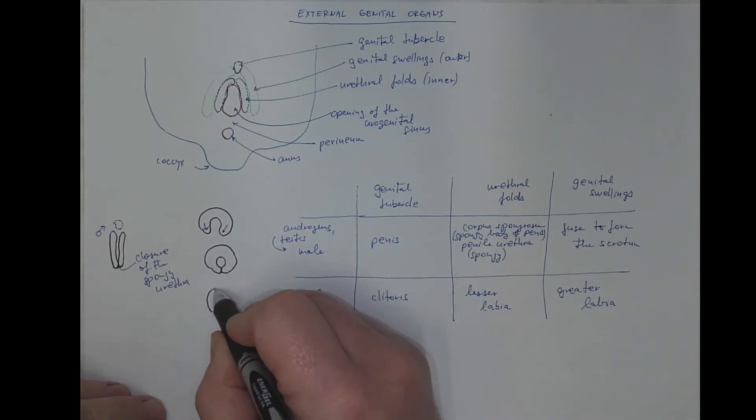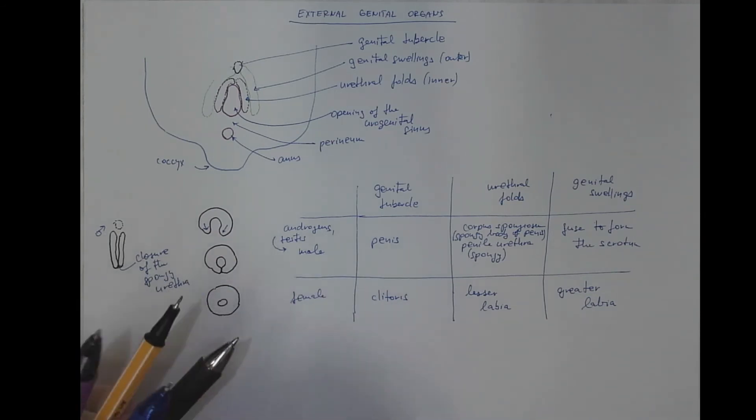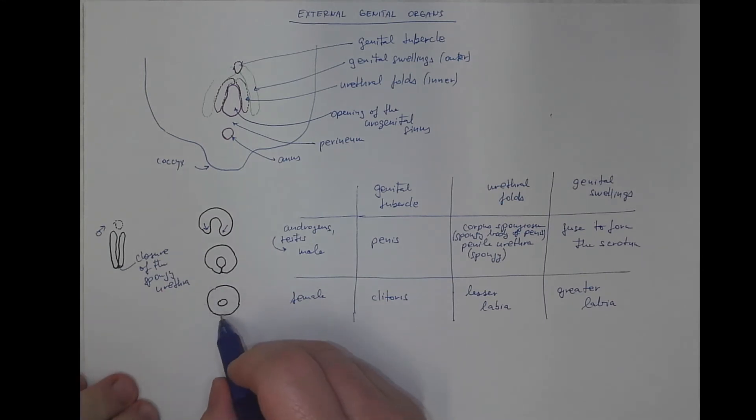That can be observed on the ventral side of the penis. Finally, there is a spongy body with the lumen of the penile urethra.